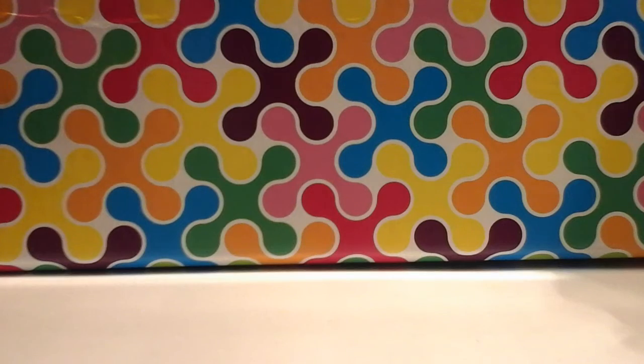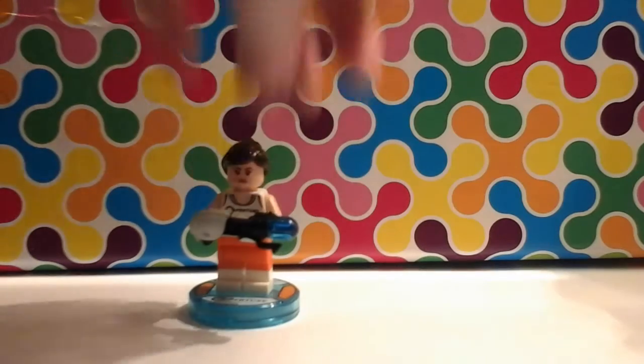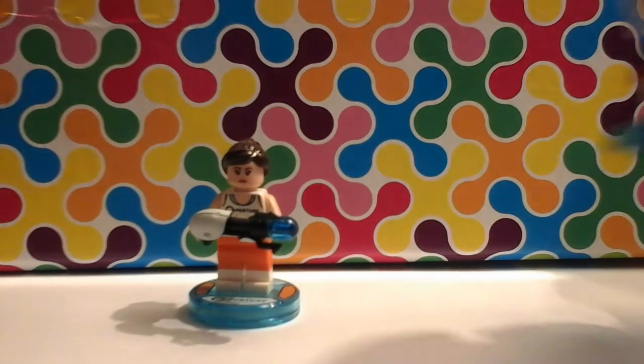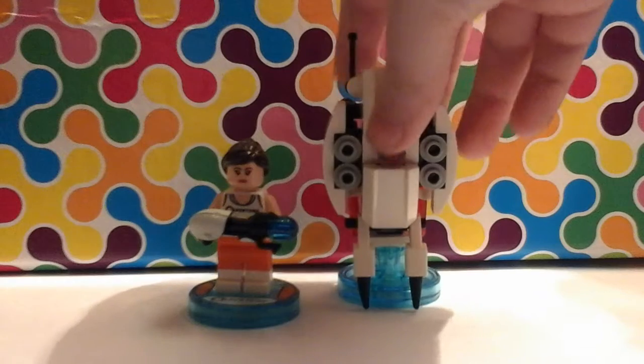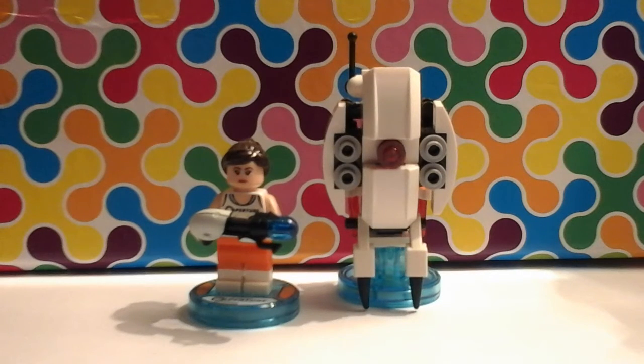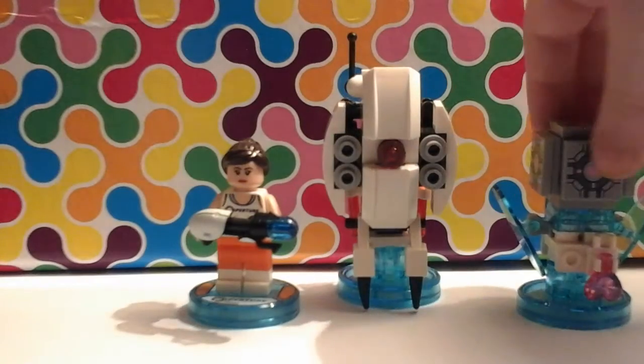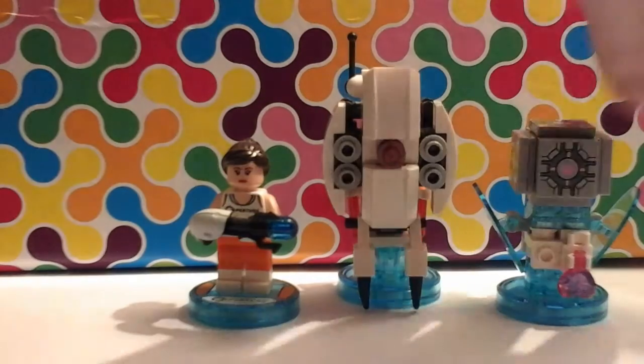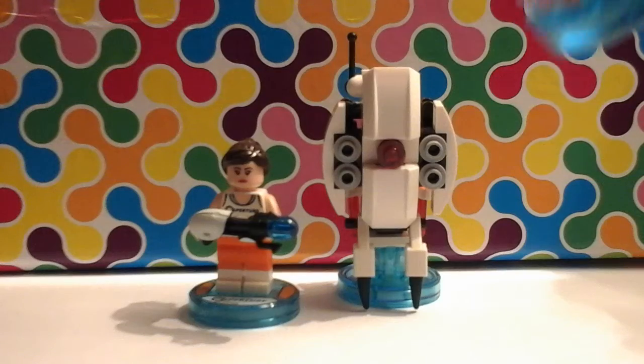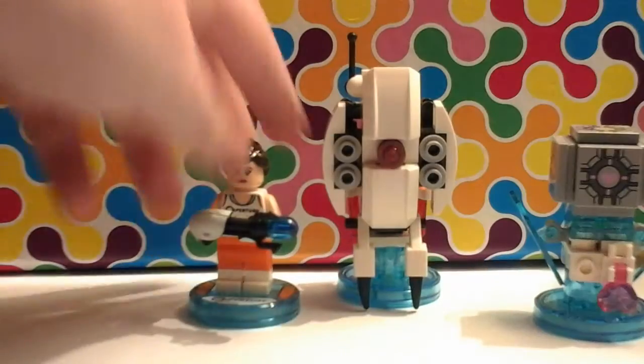This is the last Lego Dimensions. Chell from Portal and she comes with the, oh what's it called? I forget what it's called. I'll remember that sometime. But she also comes with the companion cube with a little heart jewel there. That's really cool. I'll show the figure first.